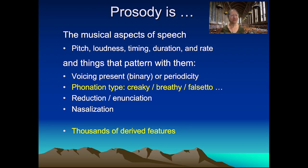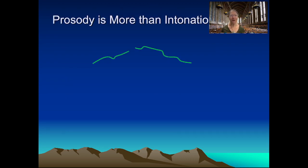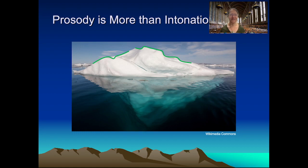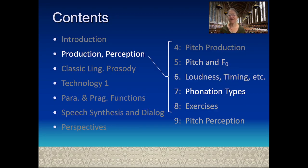We've now seen the last of the several types of prosodic features covered so far. There are actually many more features derived from these basic features that characterize broader spans of speech — for example, through maxima or minima — and we'll cover those in later lectures. Hopefully we've convinced you that prosody is more than intonation. To use a bit of a cliché, F0 is just the tip of the prosodic iceberg, with many features contributing to prosodic structure. In the next lecture, we'll give you a chance to sharpen your skills in terms of production and perception of speech prosody.